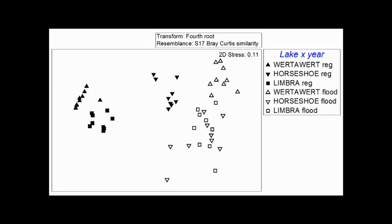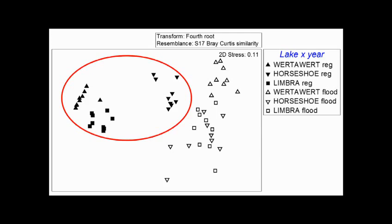Looking at the fish assemblage data in an MDS plot, we can see two clear groupings: fish assemblages in the lakes during regulator operation group together, and fish assemblages during flooding in those same lakes group together separately.